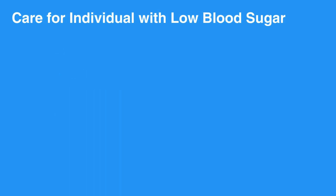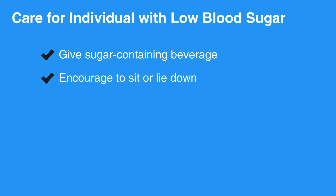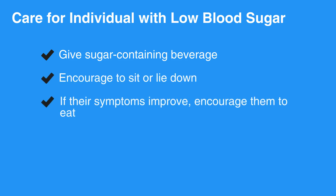To care for an individual who has low blood sugar, give them a sugar-containing beverage, such as fruit juice, milk, or a soft drink. Encourage them to sit or lie down. If their symptoms improve, encourage them to eat. Also, be sure to call 911.